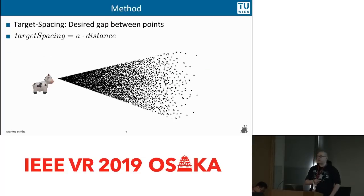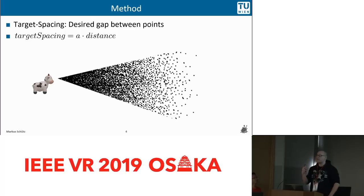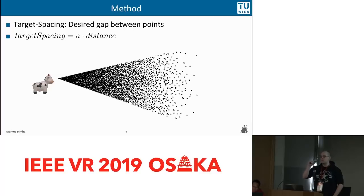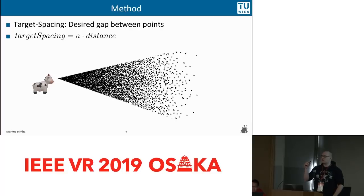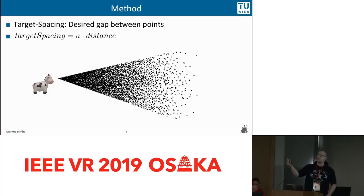The basic idea behind our method is that we want to sample the point cloud so that we have a certain target spacing between points at a certain distance. For example, at a distance of one meter we may want a spacing of around one millimeter between each point, and at a distance of 10 meters we want 10 times that distance.